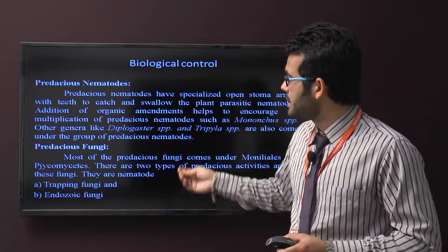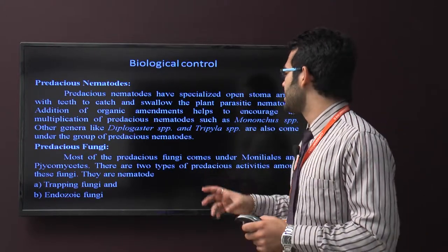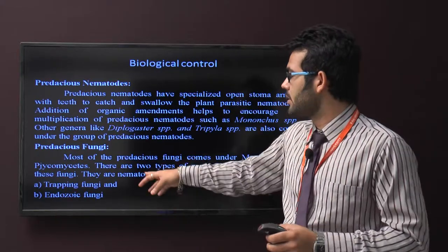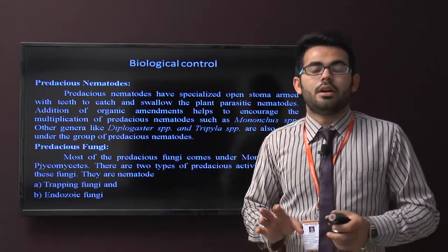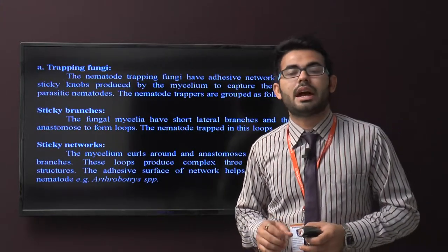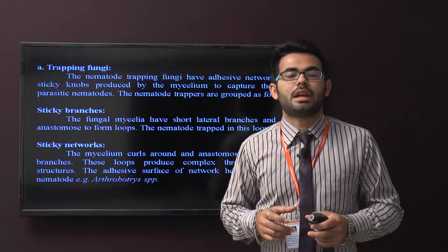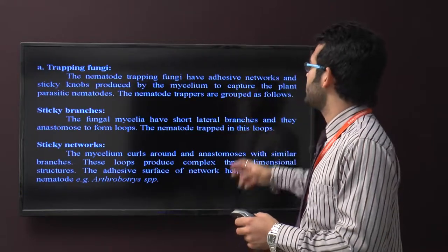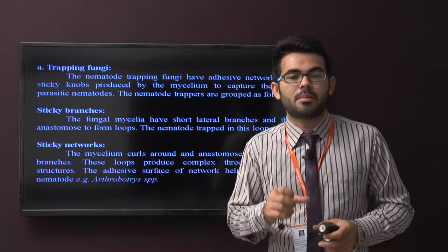There are some predacious fungi. In predacious fungi they control through trapping fungi and endozoic fungi. First is trapping fungi. Nematode-trapping fungi have an adhesive network and sticky knobs in their body structure. They are produced by the mycelium to capture the plant parasitic nematodes.